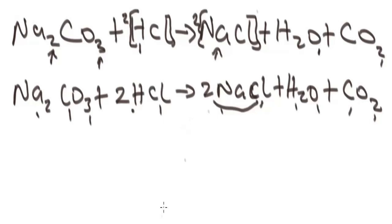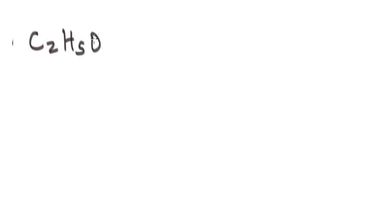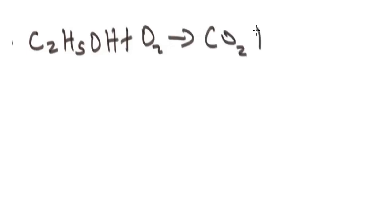So let's solve another problem. This time we are given these compounds: C₂H₅OH — that's ethanol — plus oxygen to give us carbon dioxide plus water H₂O. So how do we balance this chemical equation? As usual, we apply atom count to it.